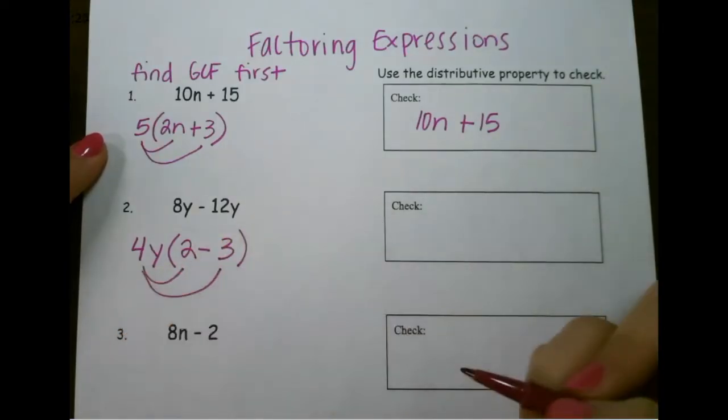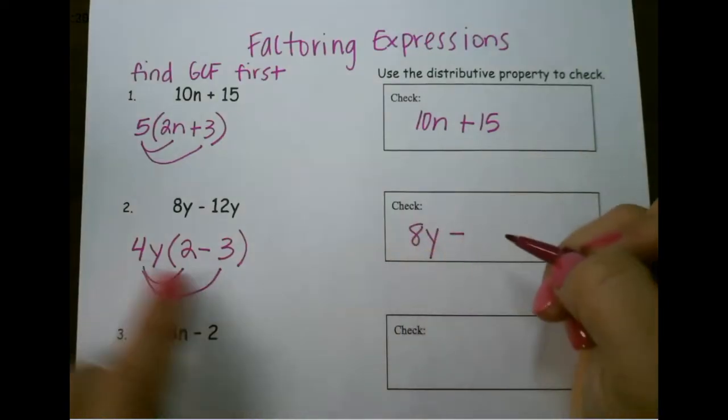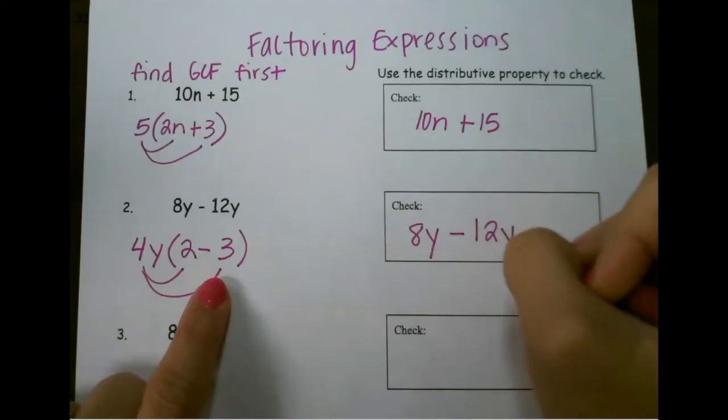Again, you can always check your answer. 4y times 2 is 8y, and 4y times 3 is 12y.